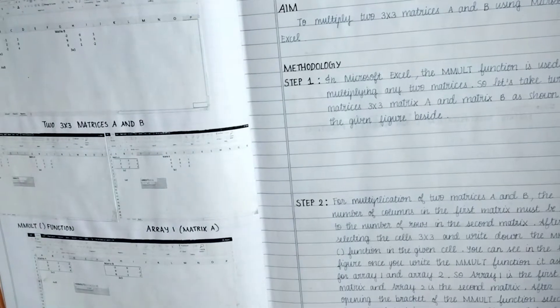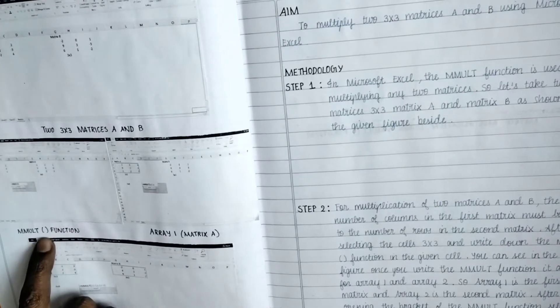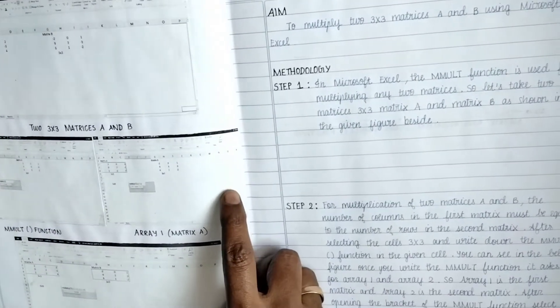So how do you do the entry of a 3x3 matrix? MMULT is the function. This is how you do matrix multiplication. This is the function name and array one, how do you select, array two, how do you select.